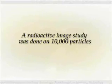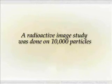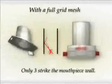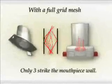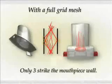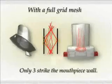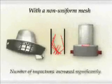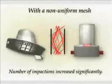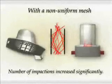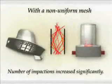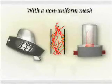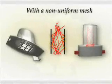A radioactive imaging study was done on 10,000 particles with different mesh configurations. Three key scenarios were observed. With a full grid mesh, as in Loopyhaler, only three particles strike the mouthpiece wall. With a non-uniform mesh, the number of mouthpiece wall impactions increased significantly.